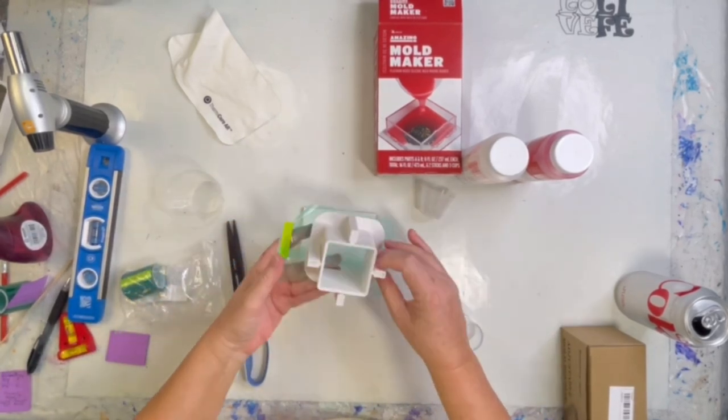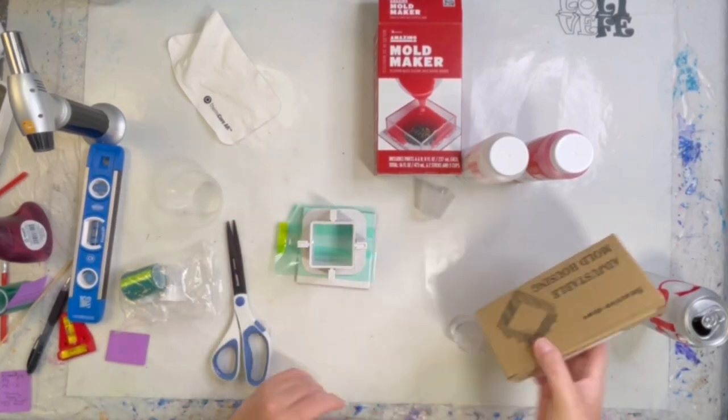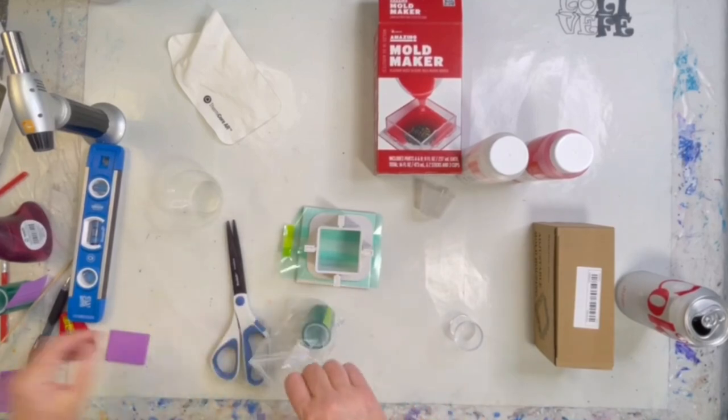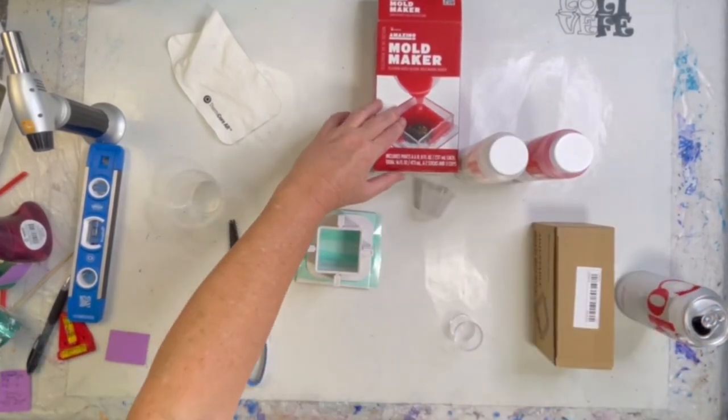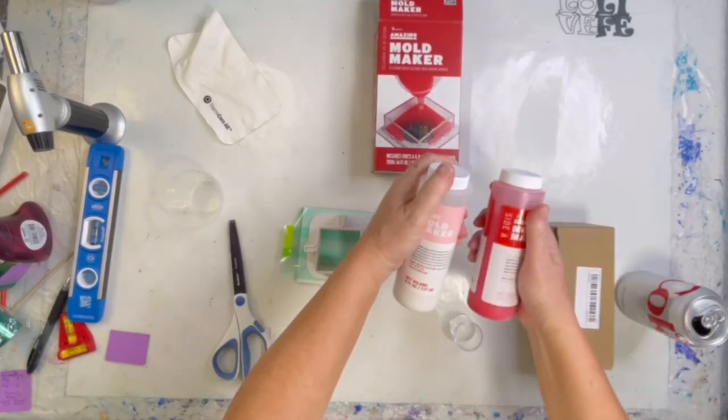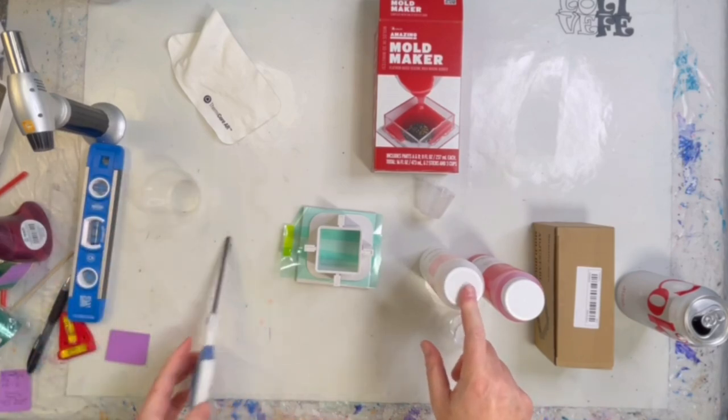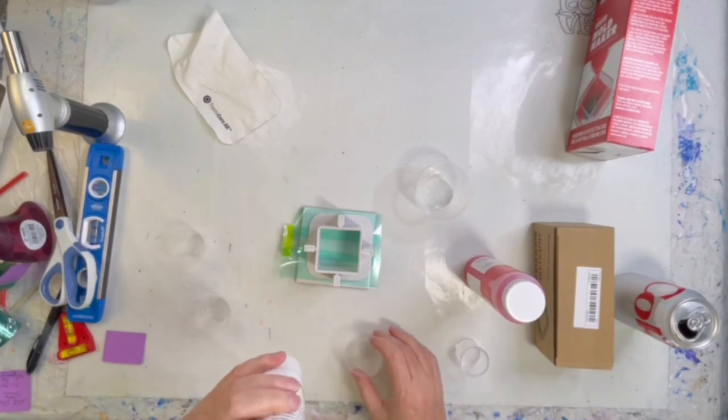So I got this adjustable mold housing off of Timu. The tape is also off of Timu. And then the silicone rubber I actually bought at, I think it might have been Hobby Lobby. And this is one-to-one.